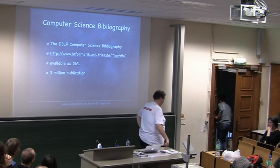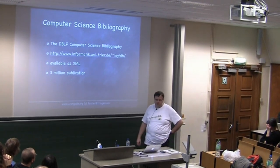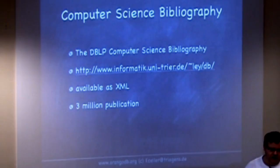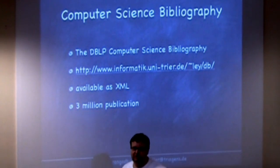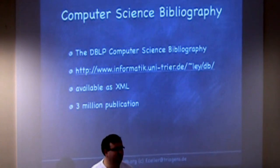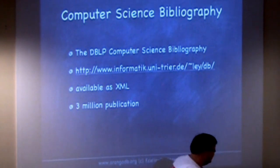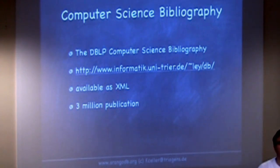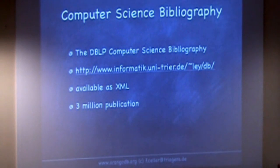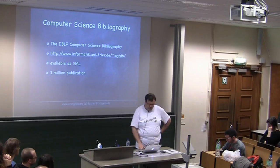So, what's the data we are looking at? It's the DBLP computer science bibliography, available from the University of Trier. Basically, it's a large XML file containing around 3 million publications. We wanted to use a different approach than discussed this morning, to see what we could do to display that data set. It's clear you can't possibly display 3 million nodes on a computer screen — that would be ridiculous. So these are the very first things I wanted to show you.